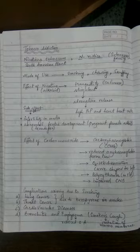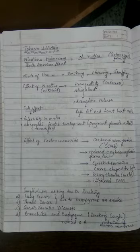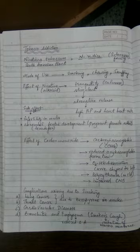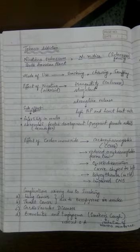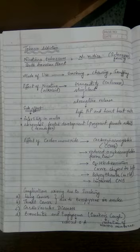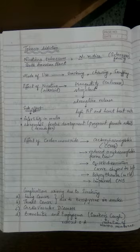Complications arising due to smoking include oral cancer, throat cancer, and lung cancer, caused by irritating substances in smoke such as benzopyrene. Nicotine's increase of blood pressure and heartbeat rate can later lead to cardiovascular diseases. Smoking also causes smoker's cough, which is bronchitis — irritation of the mucous membrane of the bronchi and bronchioles causes continuous coughing. It also leads to emphysema, which is damage to the alveolar surface; it becomes fibrous and impervious to gas exchange, decreasing the gas exchange surface area.